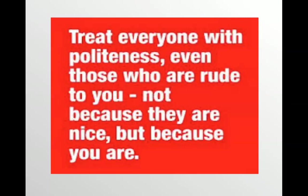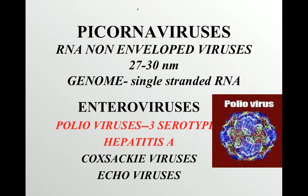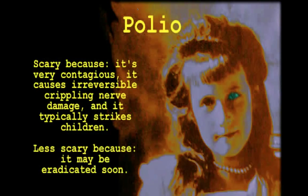In my previous lecture, I discussed poliovirus with you. It belongs to the family of picornaviruses — RNA non-enveloped viruses with a single-stranded RNA genome. Polio is a very contagious, irreversible crippling disease mainly seen in children. In most parts of the world it has been eradicated by vaccines, but it is still present as endemic in Pakistan.